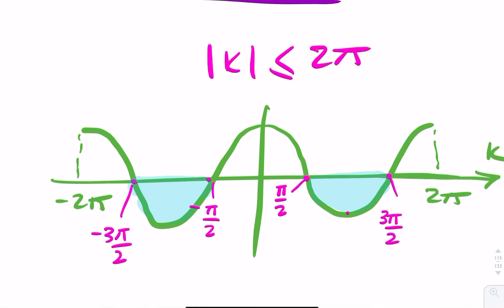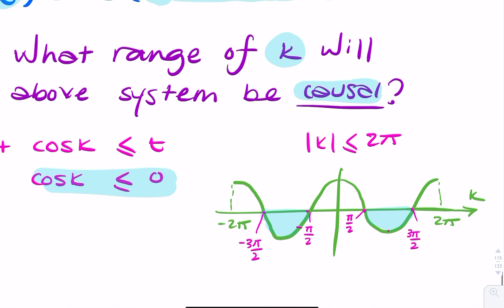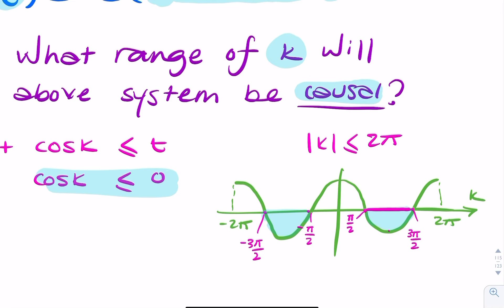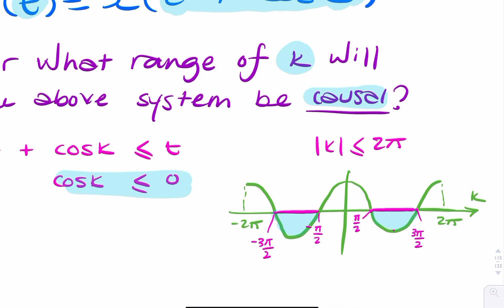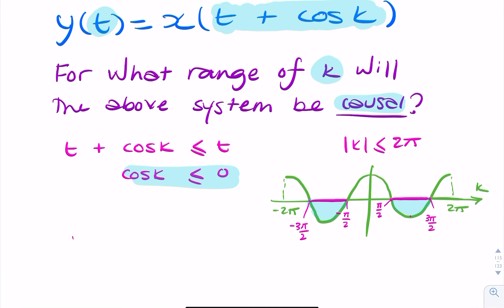So the range of values of k will be this range here and this range here. So we can summarize that and say that the absolute value of k needs to be between pi over 2 and 3 pi over 2. So that range will guarantee that my cosine will be negative.